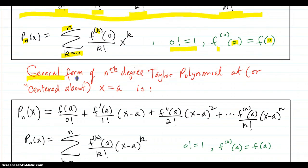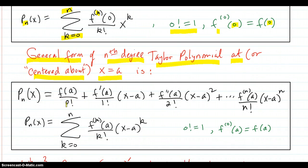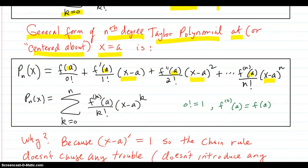Now the general form of the nth degree Taylor polynomial at, or centered about, x equals a, is you just put in the a. And it's x minus a, x minus a, x minus a, and these derivatives are evaluated at a. And the summation notation is this right here.